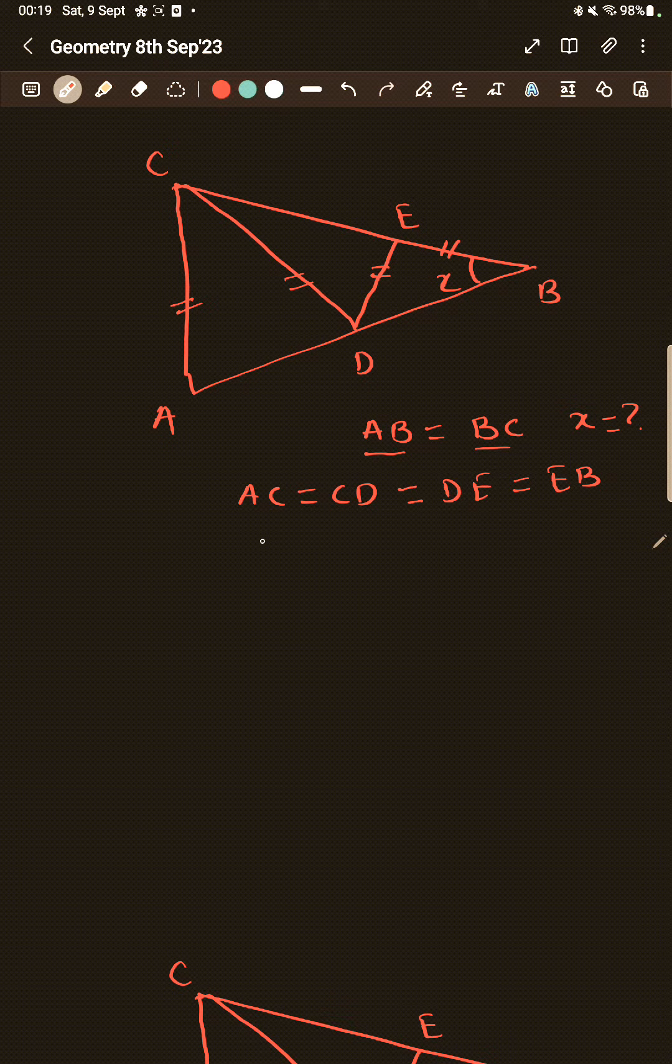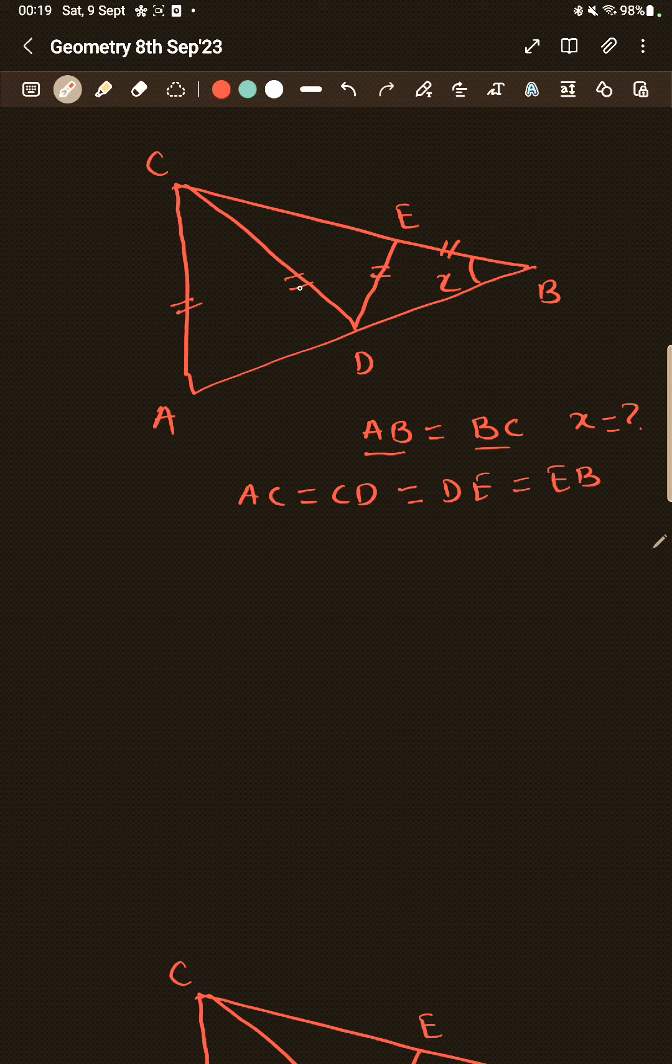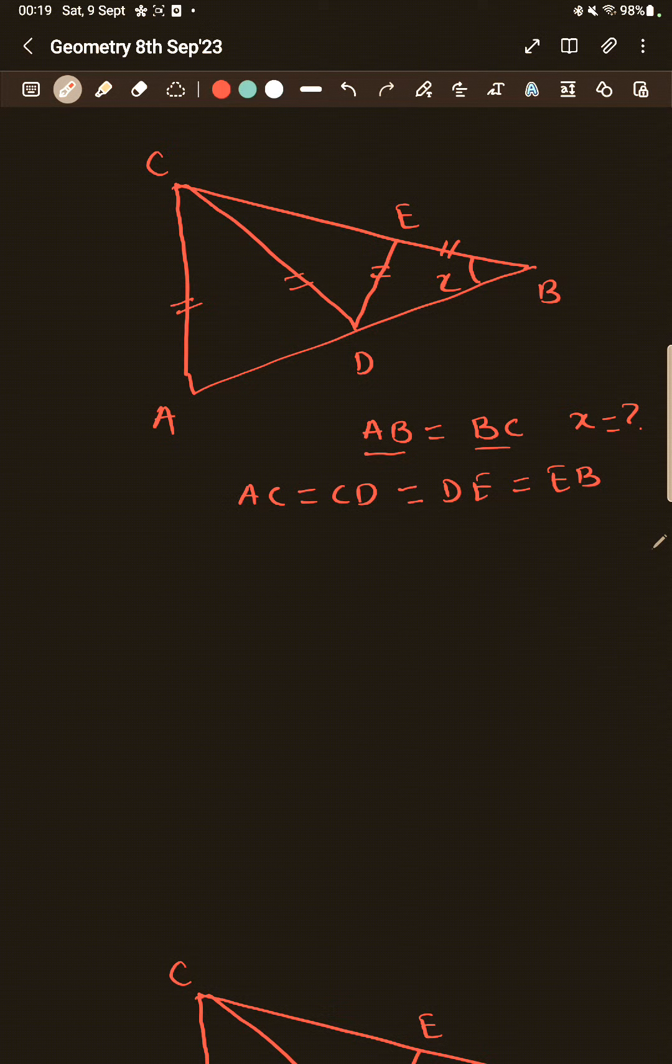And we also have AC equal to CD, CD equal to DE, which is AC, CD, DE and EB, which are equal. I need to find out X. So just have a look at this triangle. AB is equal to BC.